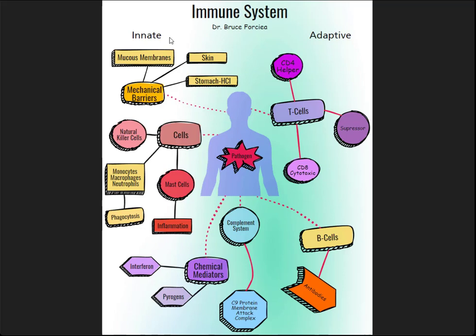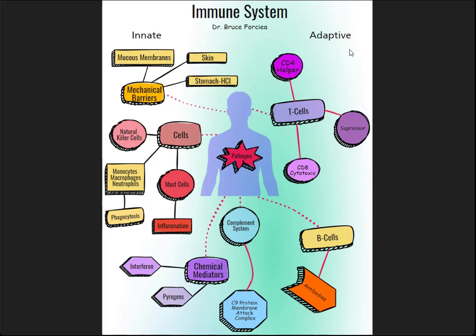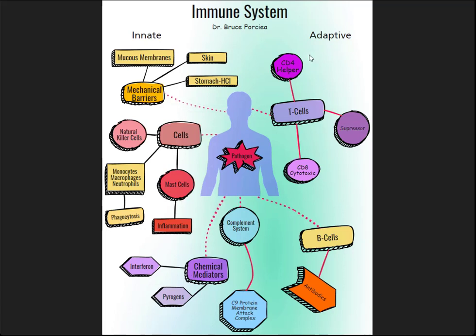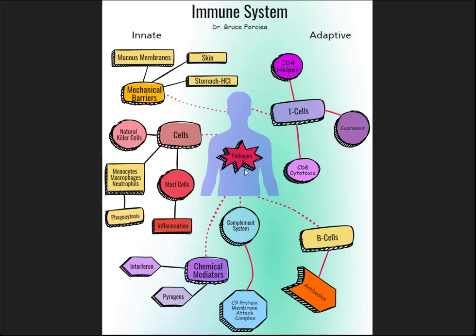Innate immunity is sometimes called nonspecific defense, and it is the same defense for all pathogens. Adaptive immunity is sometimes called specific defense, and it is specific to the antigen on pathogens. So it all begins with the introduction of a pathogen, which could be a bacterium or virus into the body. Let's take a look at innate immunity.